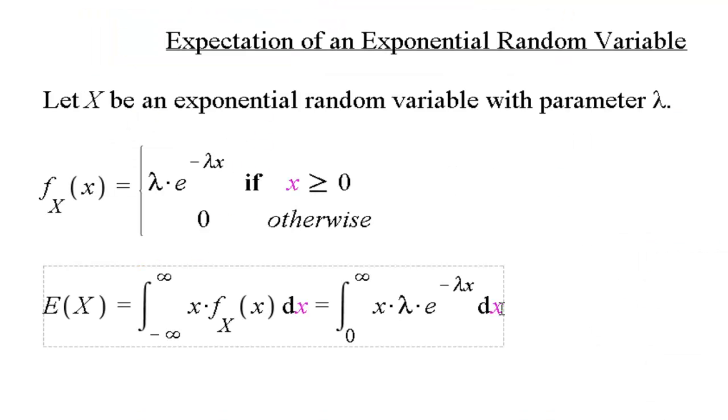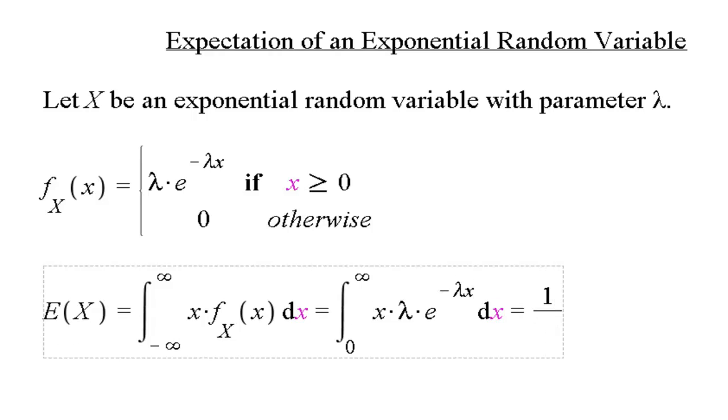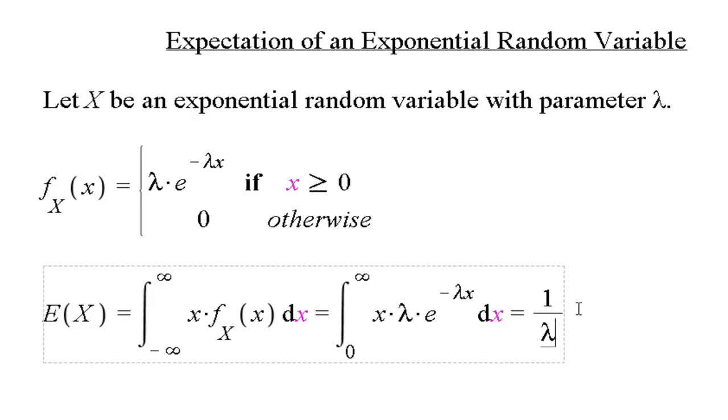So if I go back to my Maple screen here, I can just enter in one over lambda. And that sort of makes sense, because lambda is how many times we expect the event to occur in the time interval. So how long would we expect it to take for the event to occur? Well, one over that. If we expect three events to happen during the time interval, then we would expect it to take about one third of the time interval before we see that first event. And that's exactly what's going on here.